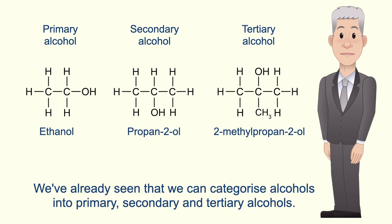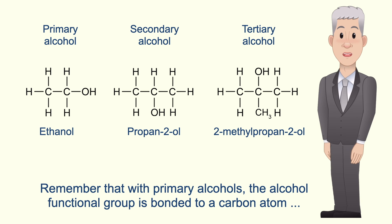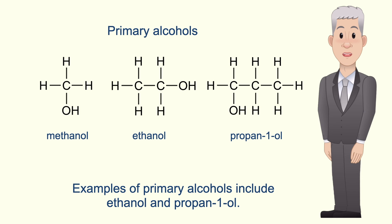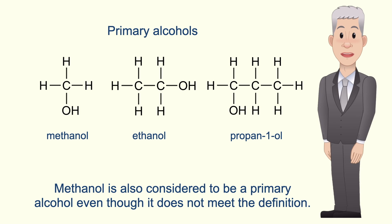We've already seen that we can categorize alcohols into primary, secondary and tertiary alcohols. Remember that with primary alcohols, the alcohol functional group is bonded to a carbon atom which is bonded to one other carbon atom. Examples of primary alcohols include ethanol and propan-1-ol. Methanol is also considered to be a primary alcohol even though it does not meet the definition.